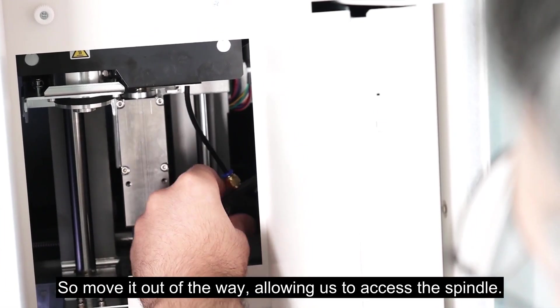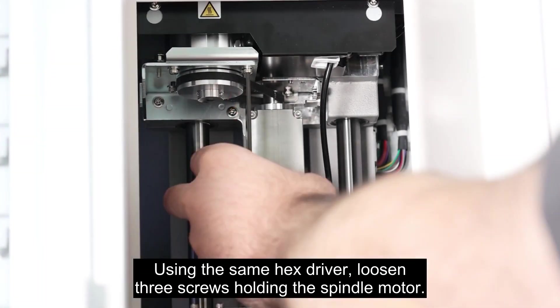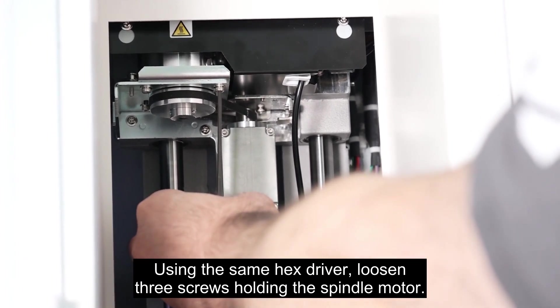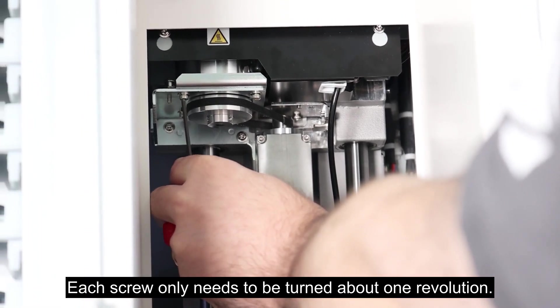So move it out of the way, allowing us to access the spindle. Using the same hex driver, loosen three screws holding the spindle motor. Each screw only needs to be turned about one revolution.